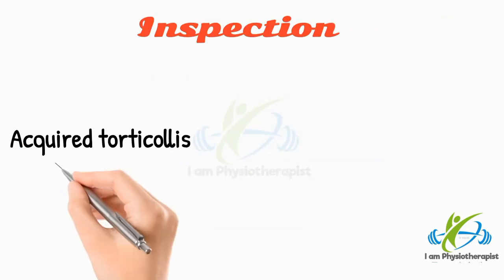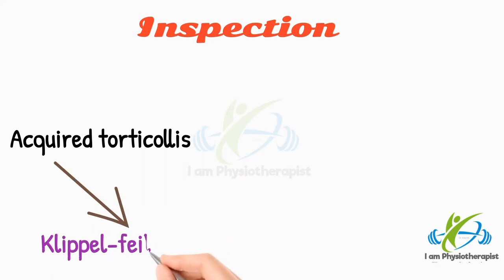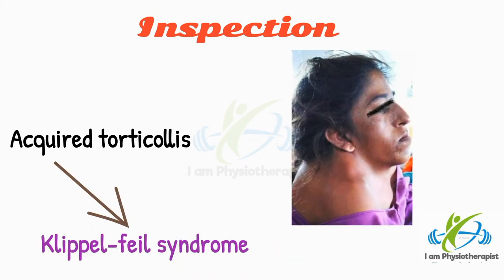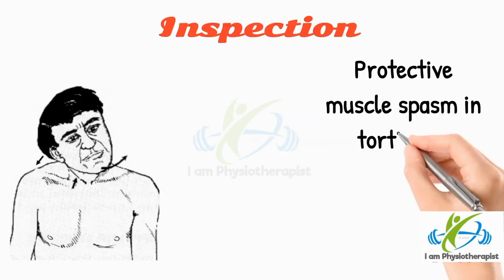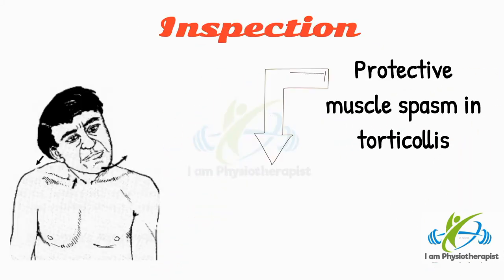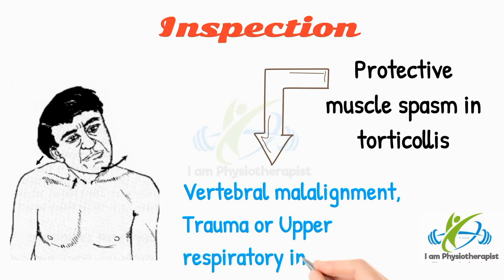Acquired torticollis may sometimes be seen accompanying Klippel-Feil syndrome. Protective muscle spasm may also be due to vertebral malalignment, trauma, or upper respiratory infection.